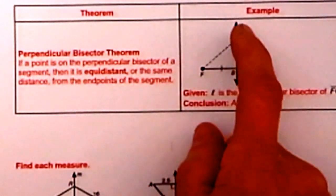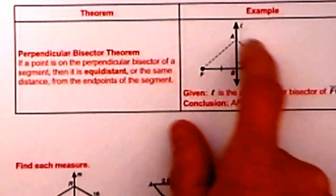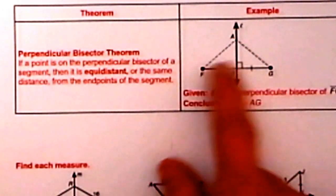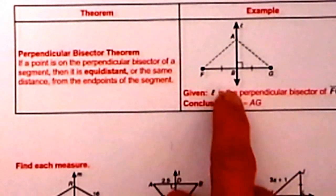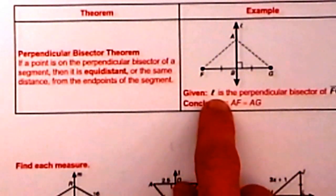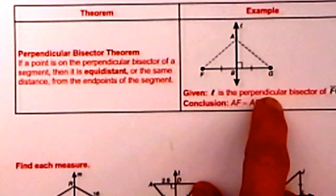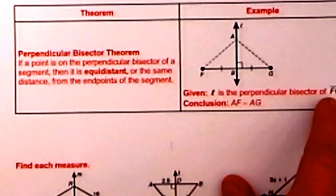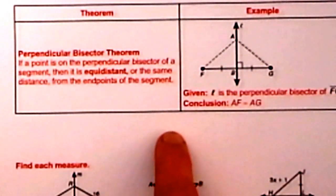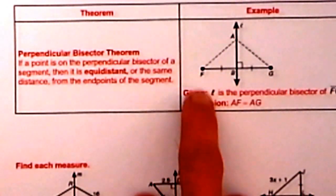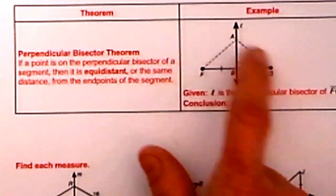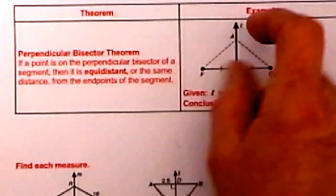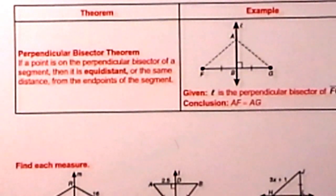It is kind of nice in geometry because that makes two right triangles that are congruent to one another. So given L, the line, is the perpendicular bisector of FG, the segment, we can conclude that AF is equal to AG. Those distances are equal to each other.